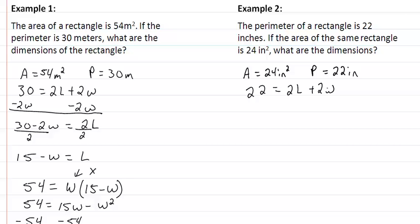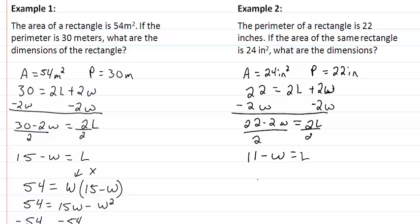So we're going to take 22 equal to 2L plus 2W. We'll just go ahead and solve for length again. We'll subtract 2W, so we get 22 minus 2W equal to 2L. Divide by 2 and we're going to get 11 minus W is equal to our length.